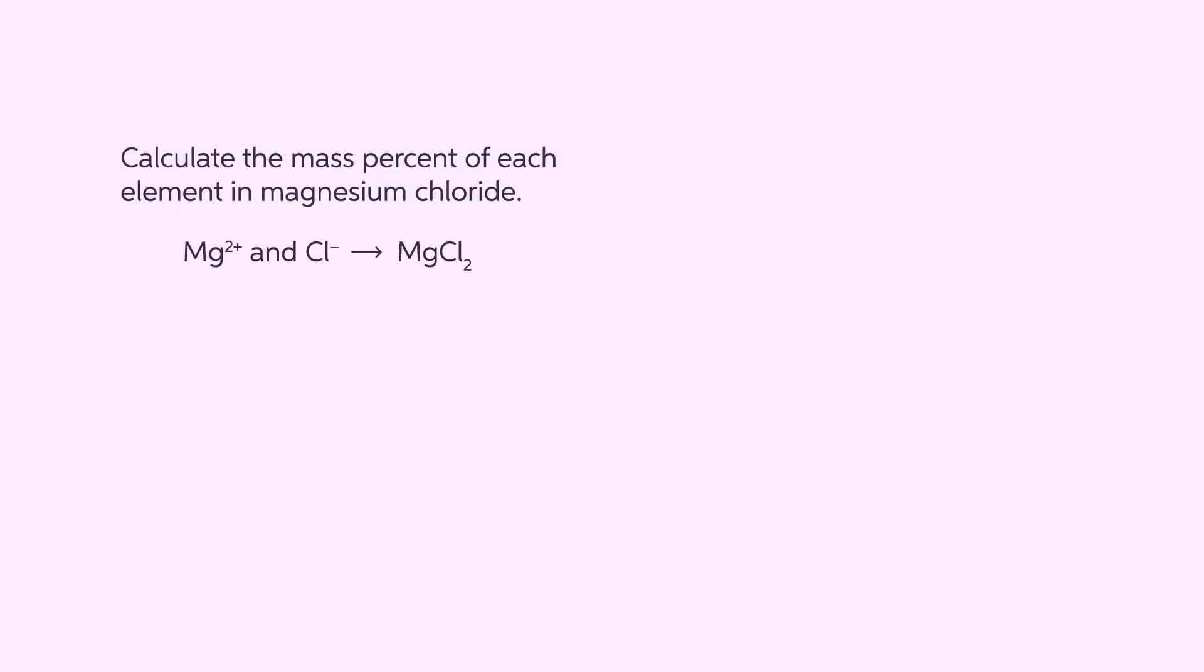Remembering ionic naming, magnesium chloride has the chemical formula MgCl2 because magnesium has a positive 2 charge and each chloride has a negative 1 charge. Since we have the chemical formula, we can base the mass percent calculations on the assumption that we have one mole of magnesium chloride.